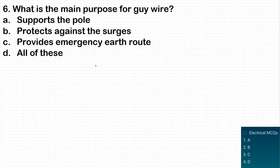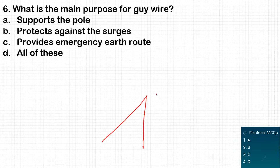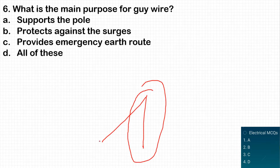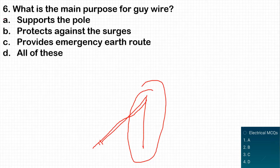The sixth question: what is the main purpose of a guy wire? As you can see, the guy wire is connected to the transmission line pole in this manner. It basically supports the pole. So option A is the correct answer — it supports the pole.